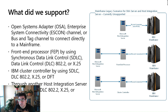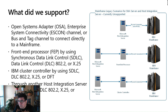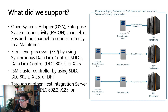So there were a number of technologies and physical devices that we supported: Open Systems Adapters (OSA), Enterprise System Connectivity (ESCON) channels, and front-end processors, which were intermediate servers used to handle connectivity with mainframes. We used what we call the Synchronous Data Link Control (SDLC) or DLC protocol, 802.2, or X.25 in X.25 networks. IBM cluster controllers using SDLC, and also through another Host Integration Server. On the right side, we see that typically we had Host Integration Server connecting via non-IP DLC connections, connecting to front-end processors in the middle that had a physical connection to mainframes, and to cluster controllers that kept a physical connection to IBM mainframes.